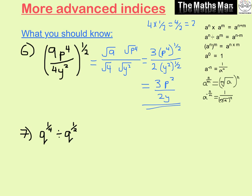Number 7 is a division, so we subtract our powers: q to the power of a quarter minus a half. To subtract these fractions we change to quarters — a quarter minus two quarters — which gives minus one quarter. So our answer is q to the power of minus a quarter.